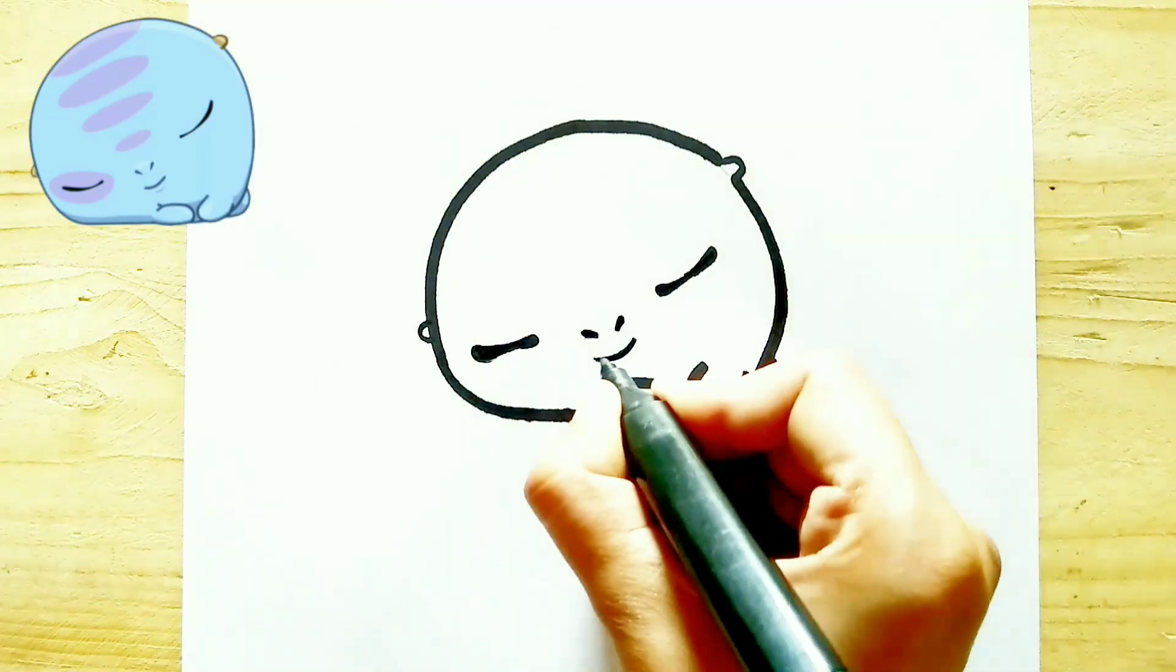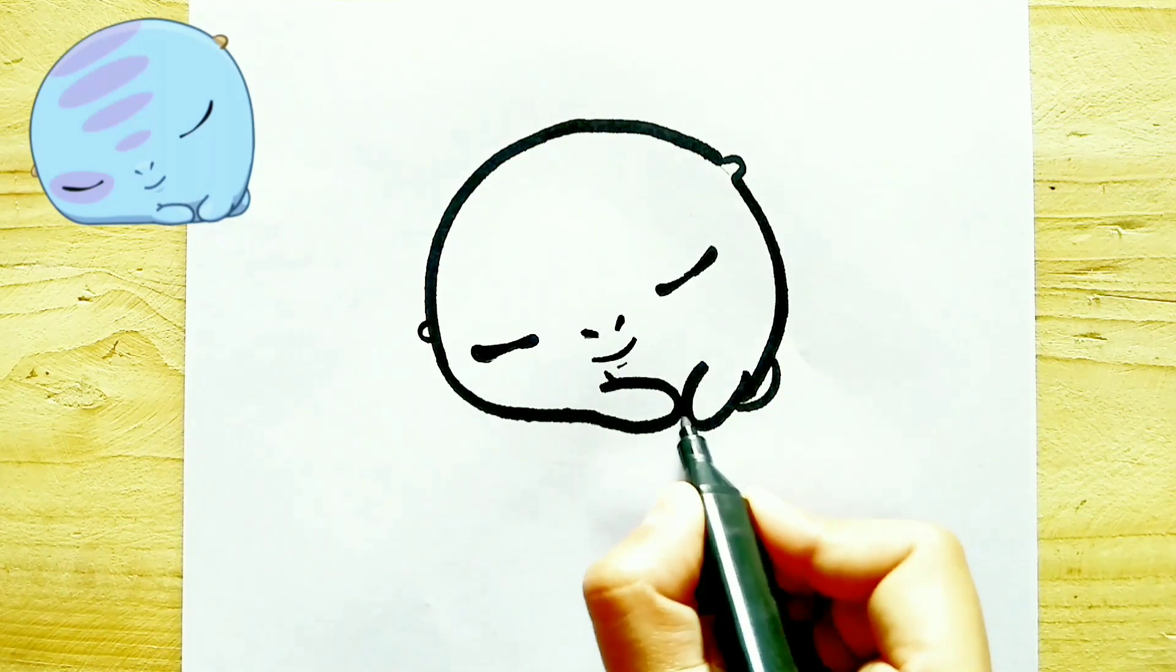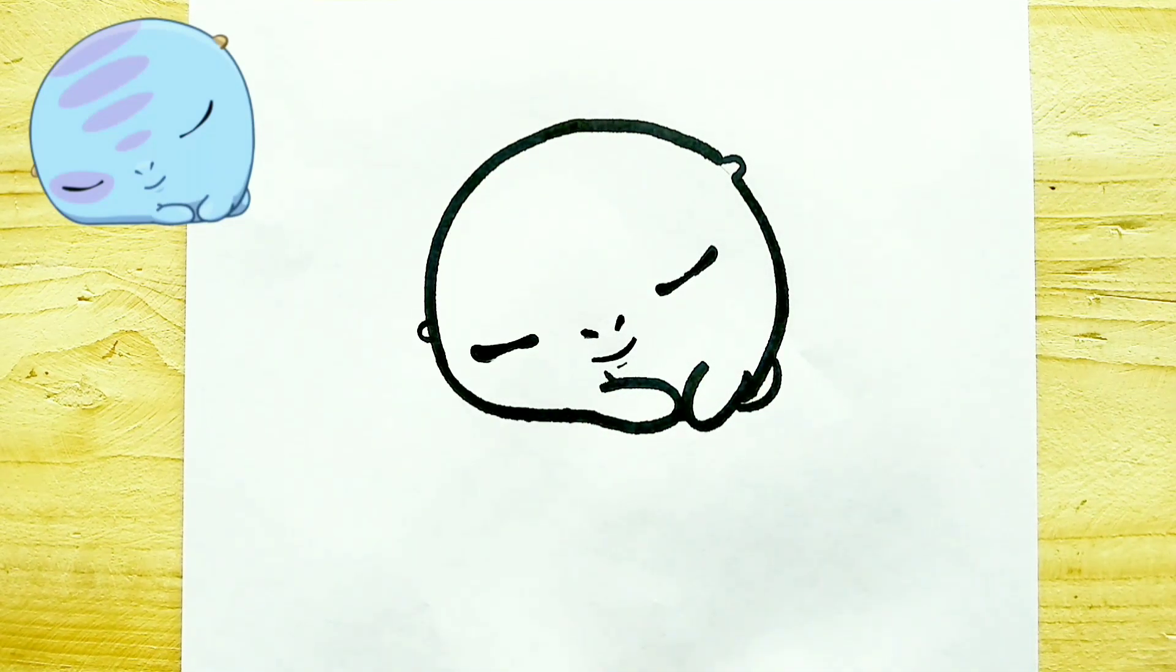So I prefer using small markers for the small drawings. After completing my outlining, I erase the extra things like the remaining pencil marks.